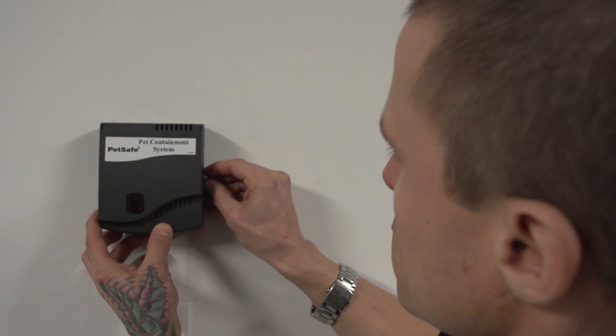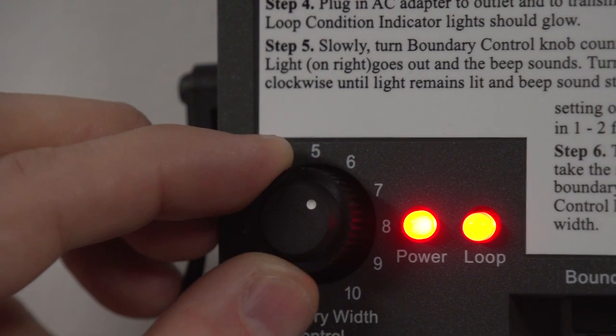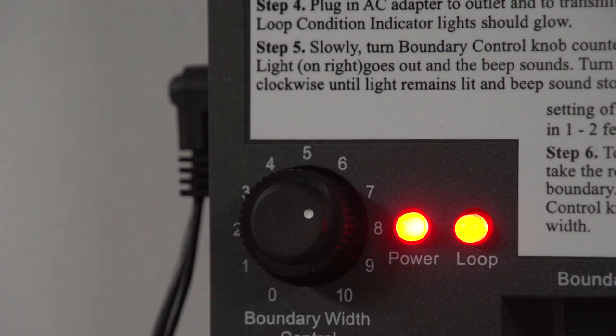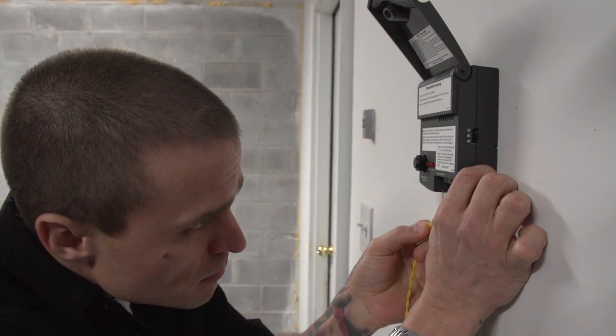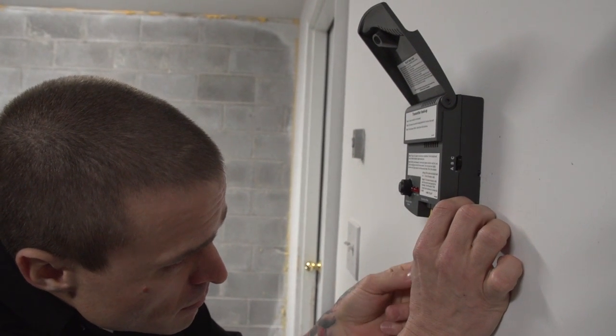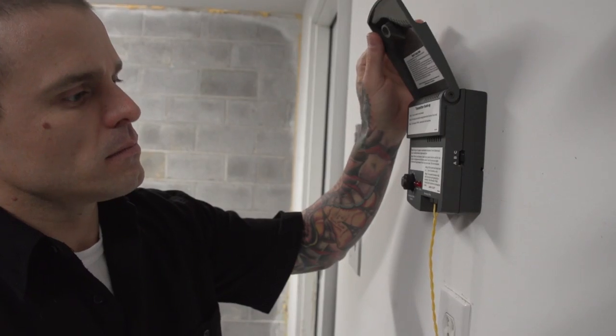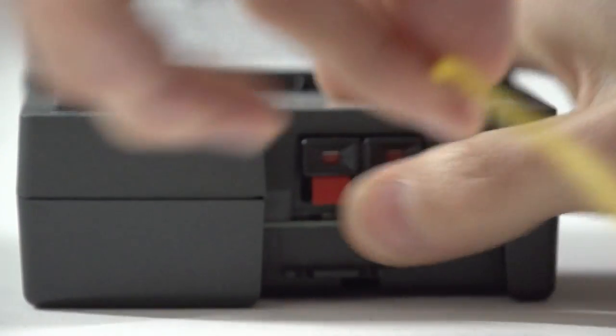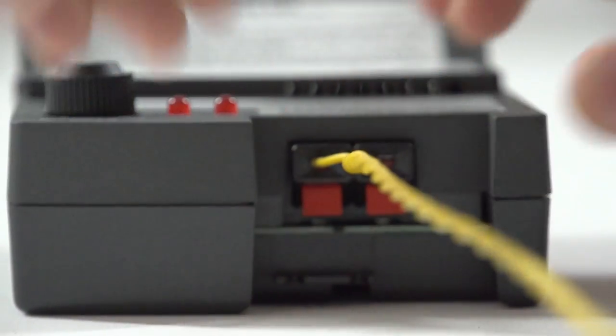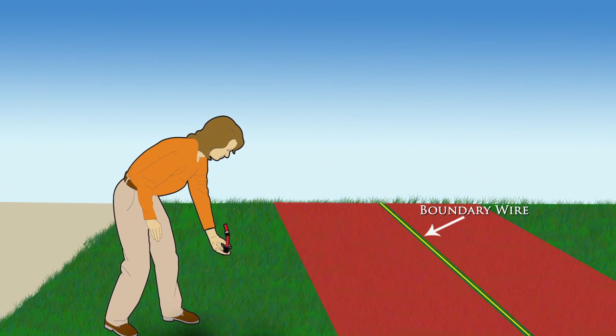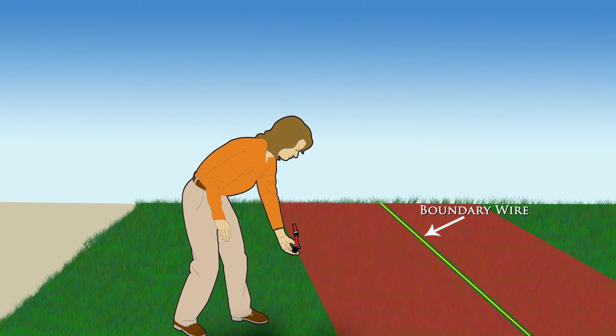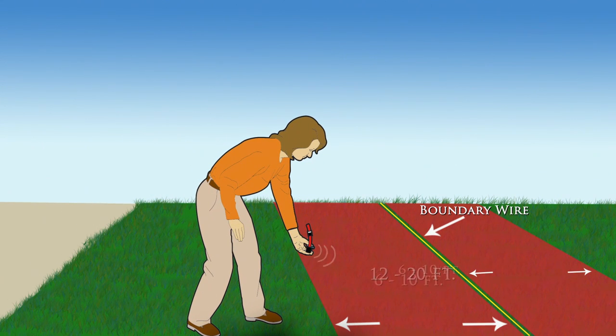When you are finished testing, return the boundary control switch and the boundary width control setting to the original position. Reconnect the twisted boundary wire from the boundary wire terminals on the fence transmitter by pressing the release levers on the connector and inserting the wires. Repeat the boundary width testing until you achieve the desired boundary width between 12 and 20 feet.